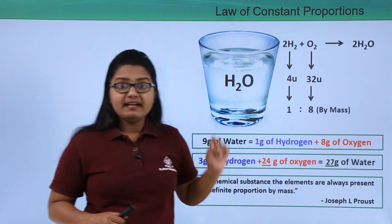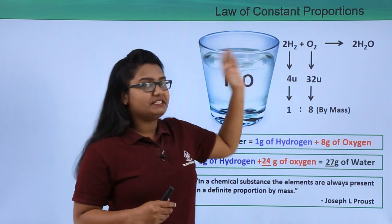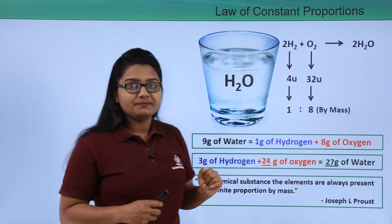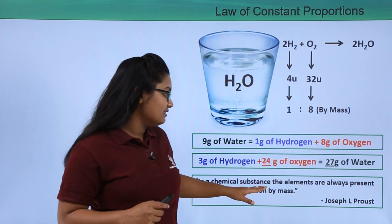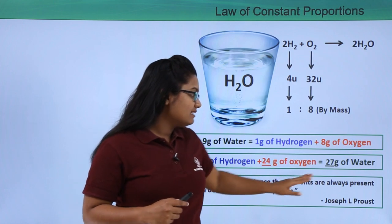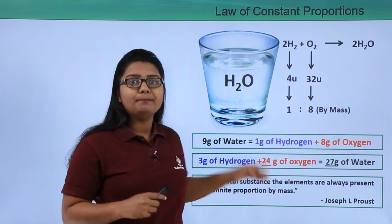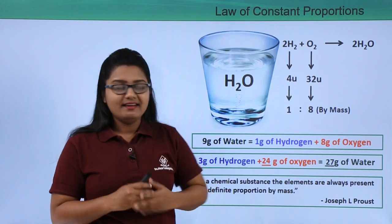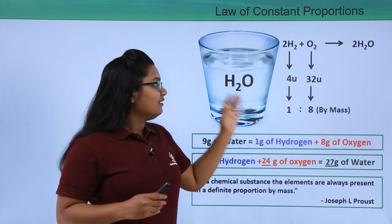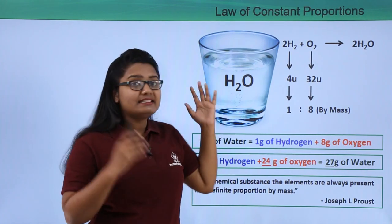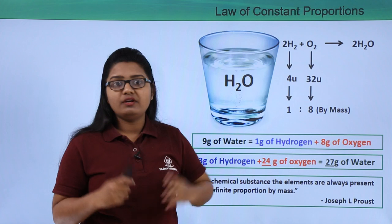This was noticed by a famous scientist named Joseph Proust, who put forth the Law of Constant Proportions. This law states that in a chemical substance, the elements are always present in a definite proportion by mass.